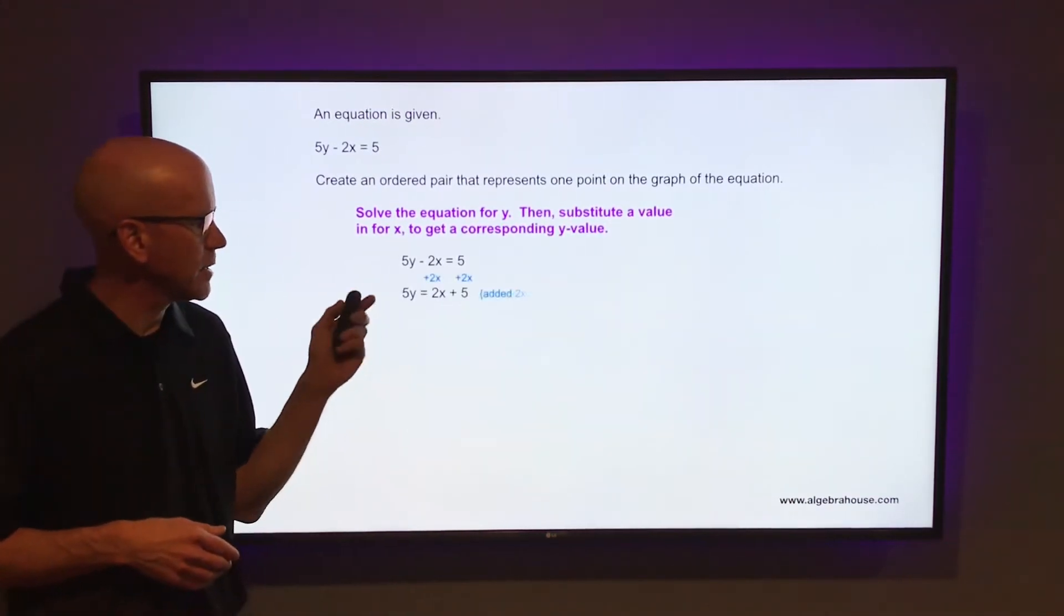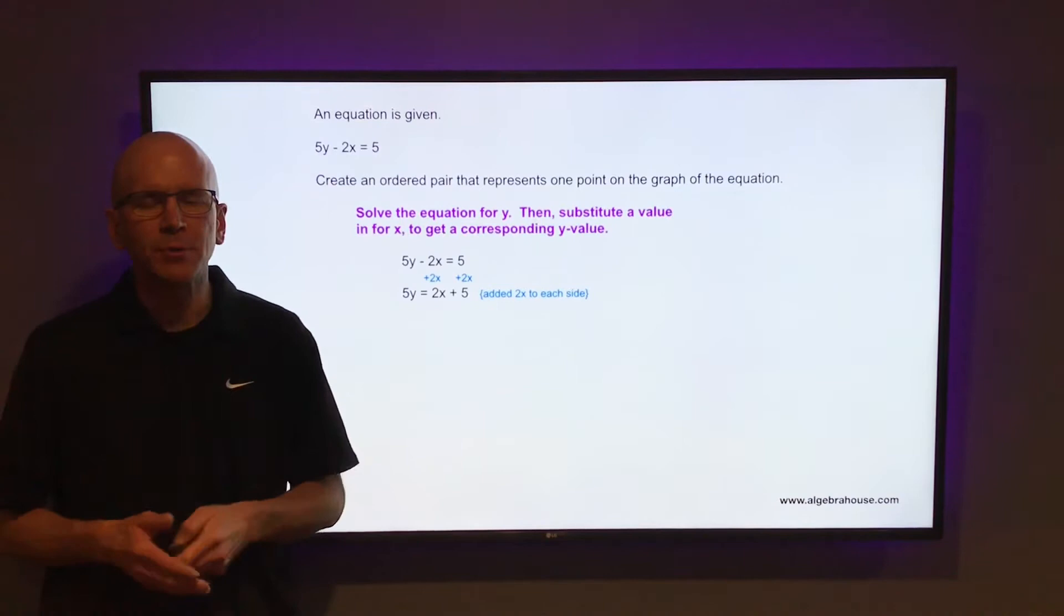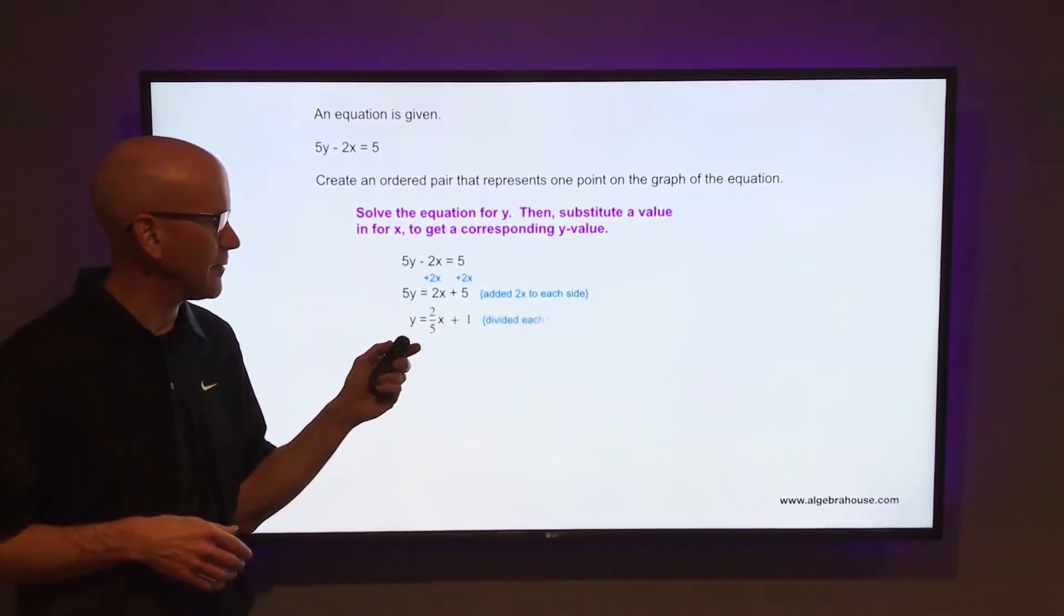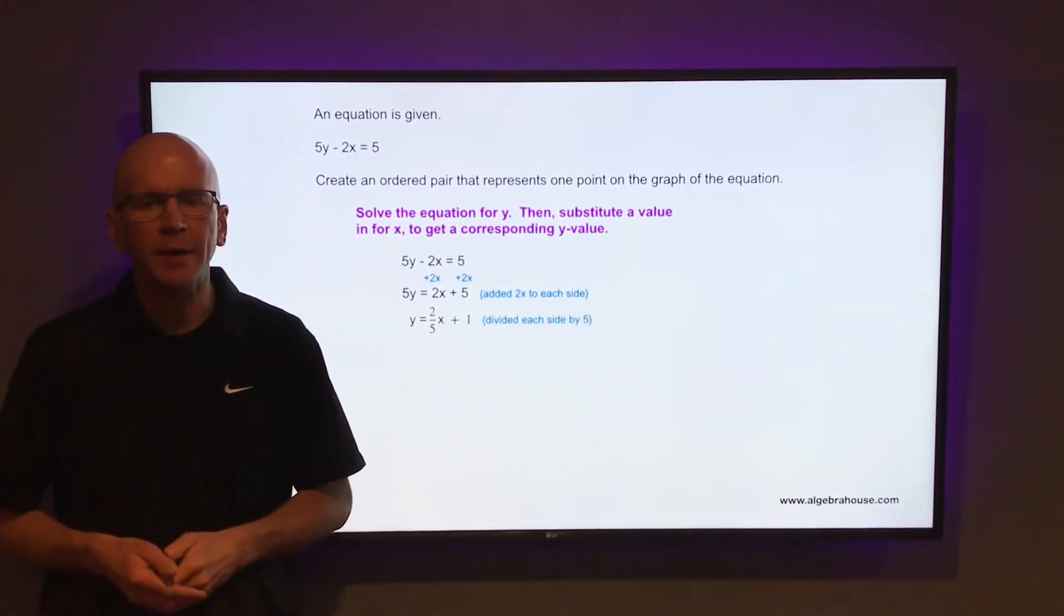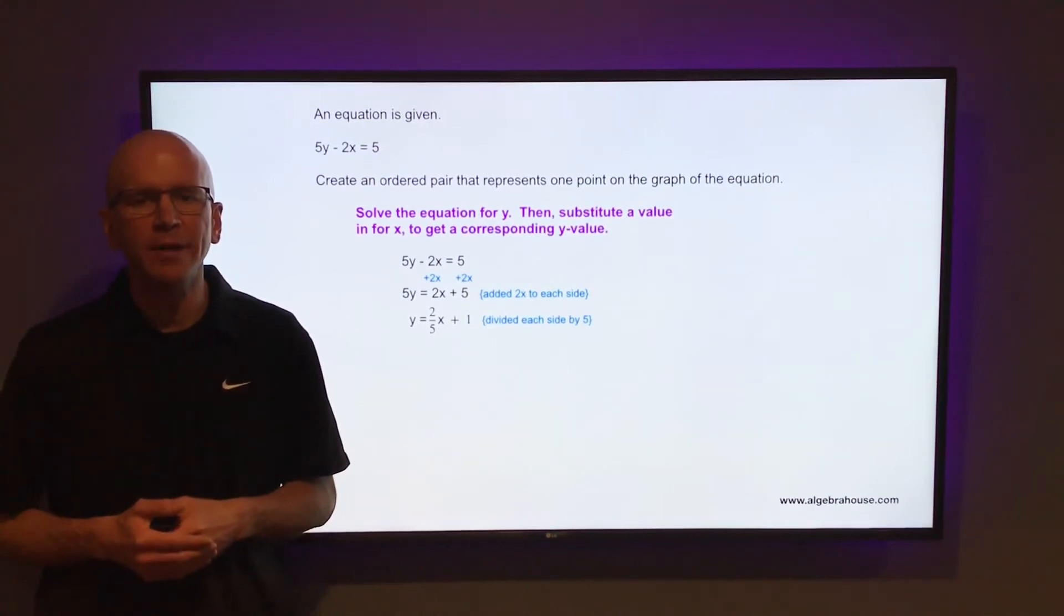So to solve that equation for y, we're going to add 2x to both sides. When you do that you get 5y = 2x + 5. Then divide each side by 5. You have y = 2x + 1.